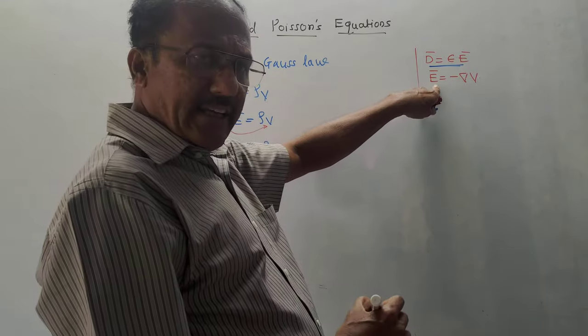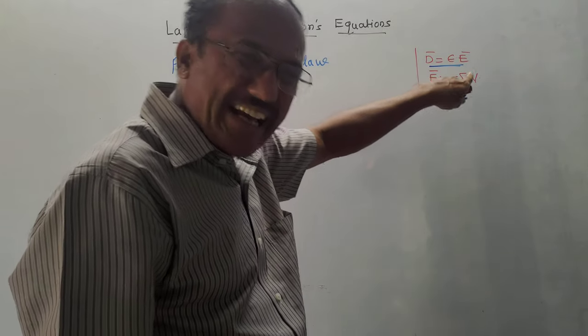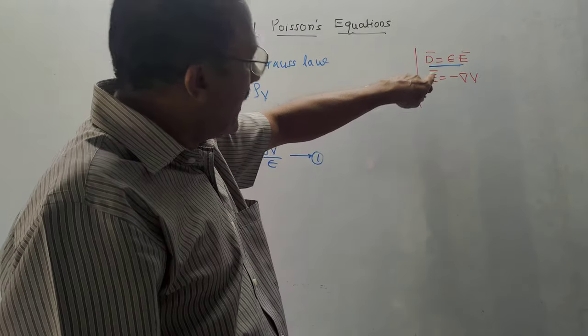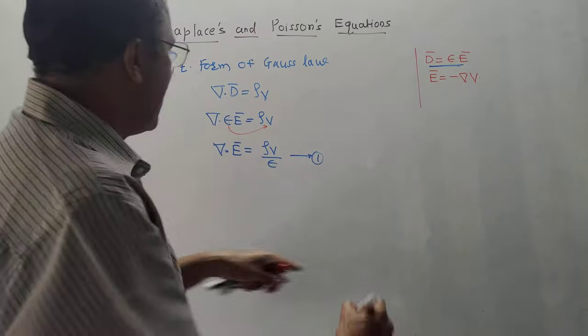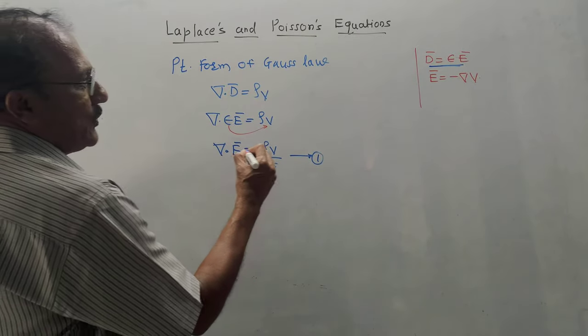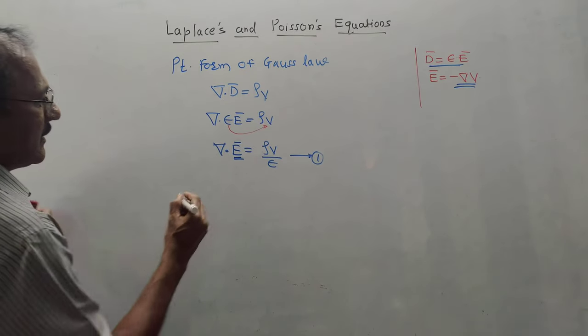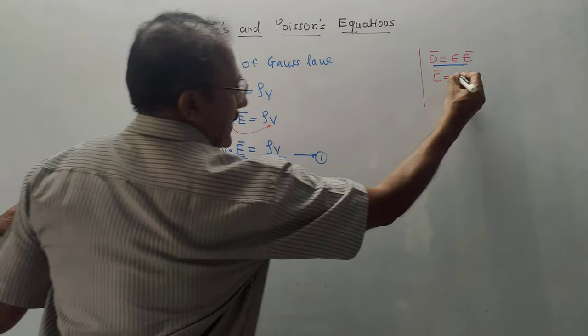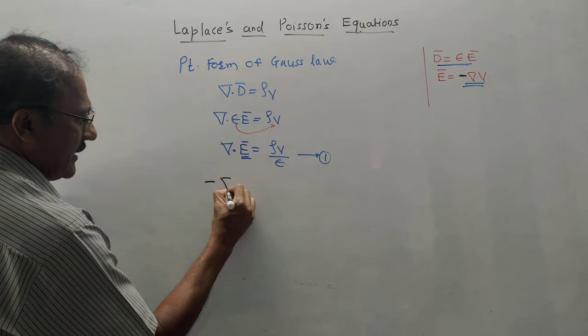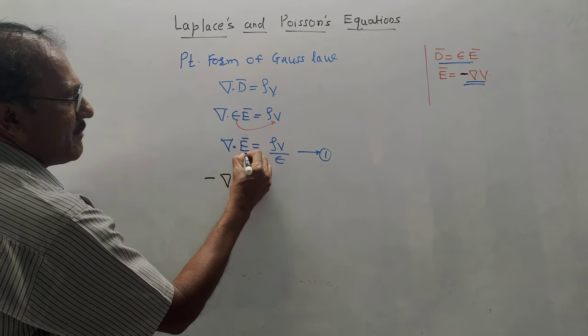Now we use the identity Ē = -∇V. Substituting -∇V in place of Ē, the equation becomes ∇·(-∇V) = ρV/ε. Taking the minus sign outside, we get -∇·∇V = ρV/ε.